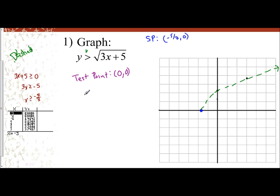And so if I use the test point, 0, 0, so y is 0, is greater than 3 times 0 plus 5. 3 times 0 is 0, so 0 plus 5 is 5. So is 0 greater than the square root of 5? Well, no.